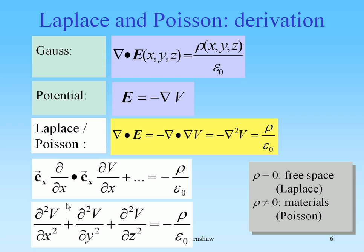This means that the second derivative of V with respect to x, y, and z, summed up, will be equal to minus rho, the charge density, divided by epsilon naught. So this is the Laplace-Poisson equation.